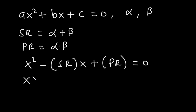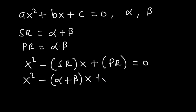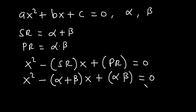So, that is going to be x squared minus, we have sum of roots to be alpha plus beta, and then we have the product to be alpha times beta, equal to zero. Let's call this equation one.